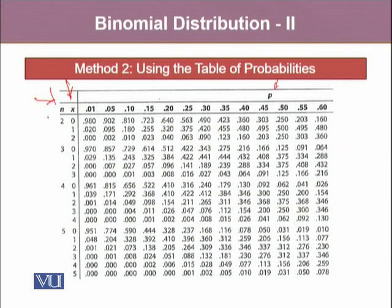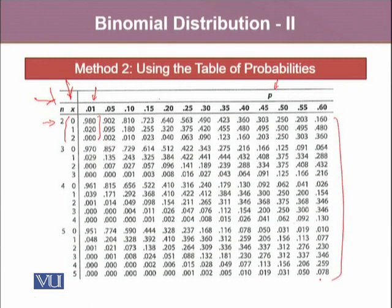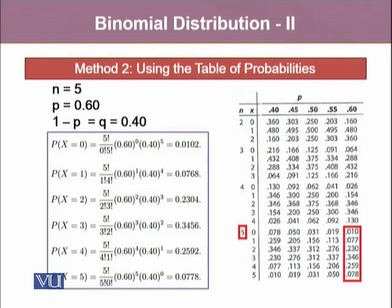You will notice that when N equals 2, X can go from 0 to 2. With P equals 0.01, it gives all the probabilities of the occurrence of these events. Similarly, for N=3 it goes from 0 to 3, for 4 it could be 0 to 4, and for 5 it could be 0 to 5, and it goes on. So all these numbers within this grid are the various probabilities at different values of the probability of success.